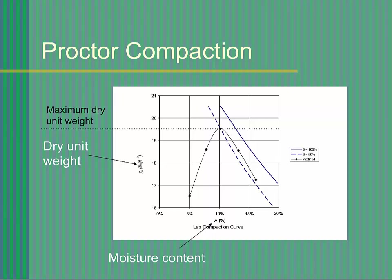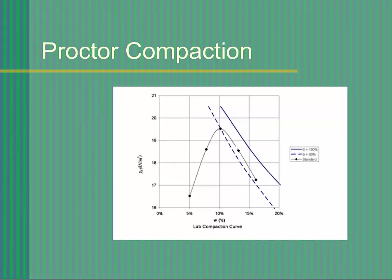Note that there is a certain moisture content, known as the optimum moisture content, that produces the maximum dry unit weight. The Proctor compaction test results consist of approximately five data points on a dry unit weight versus moisture content plot. These data points are obtained by preparing samples at five different moisture contents, compacting each sample according to the test procedures, and determining the dry unit weight for each sample.